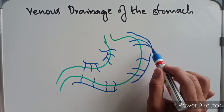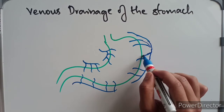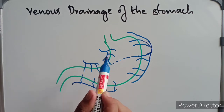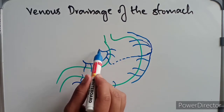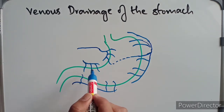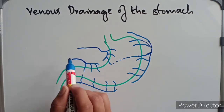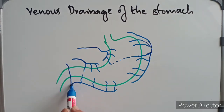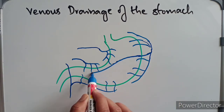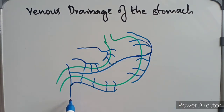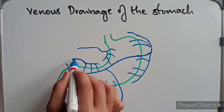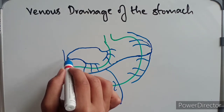The short gastric veins and left gastroepiploic vein drain into the splenic vein, since they were given off by the splenic artery. The left gastric vein and the right gastric vein drain into the portal vein. The right gastroepiploic vein drains into the superior mesenteric vein. The inferior mesenteric vein anastomoses with the superior mesenteric vein, and these two combine to form the portal vein.